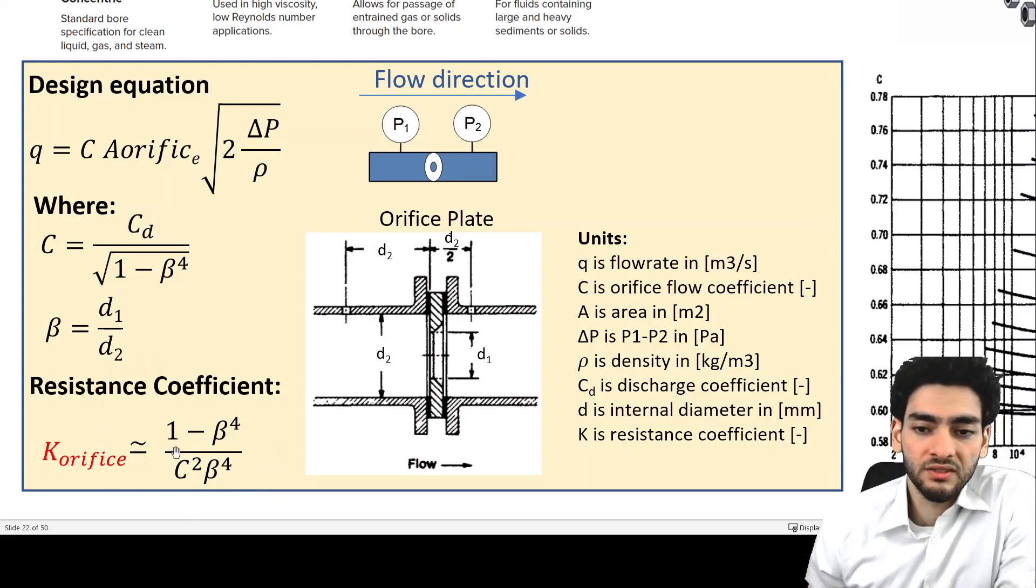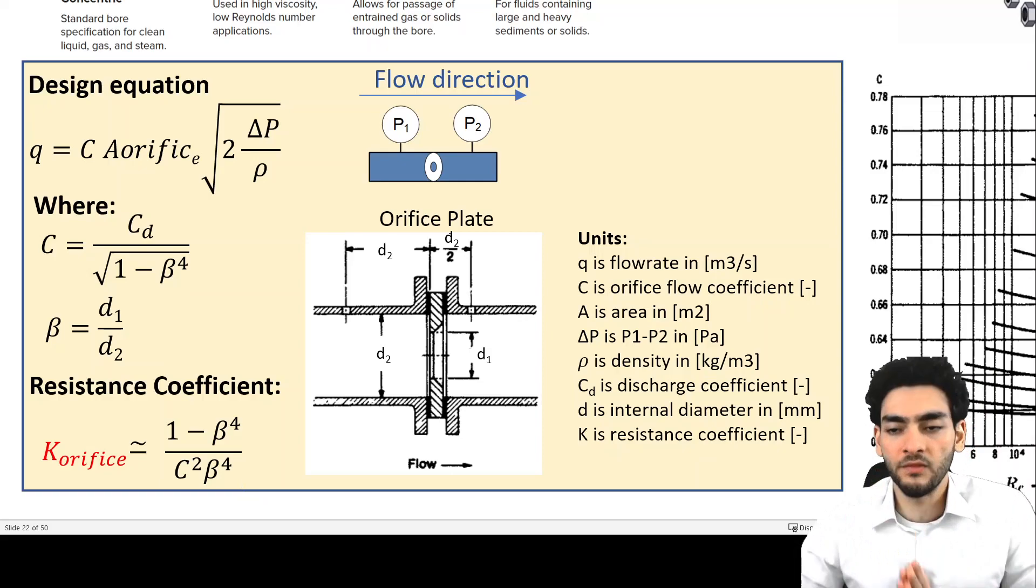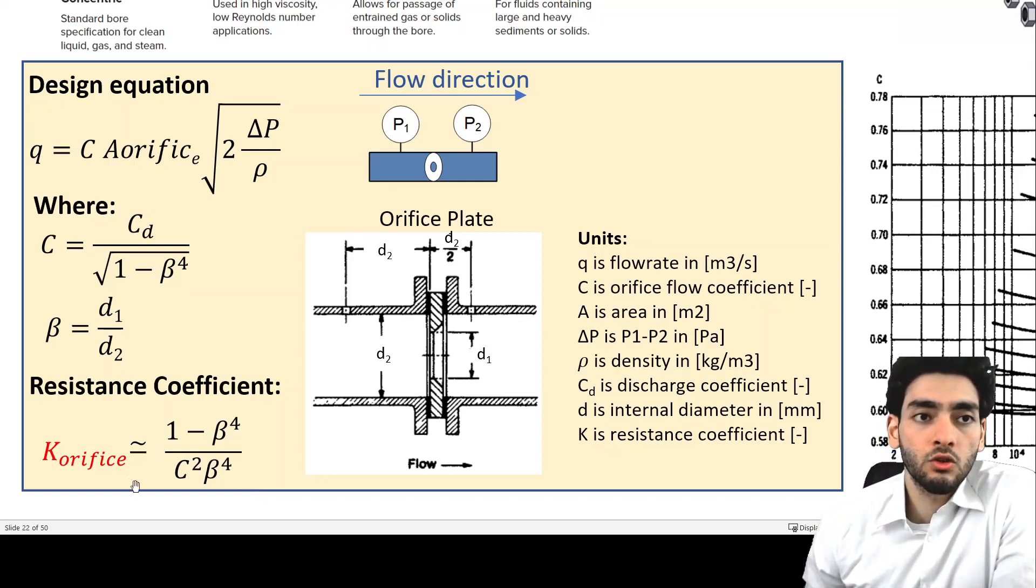...1 minus beta to the power of 4, divided by the orifice flow coefficient C squared, multiplied by beta to the power of 4. This equation is useful for calculating the resistance coefficient.